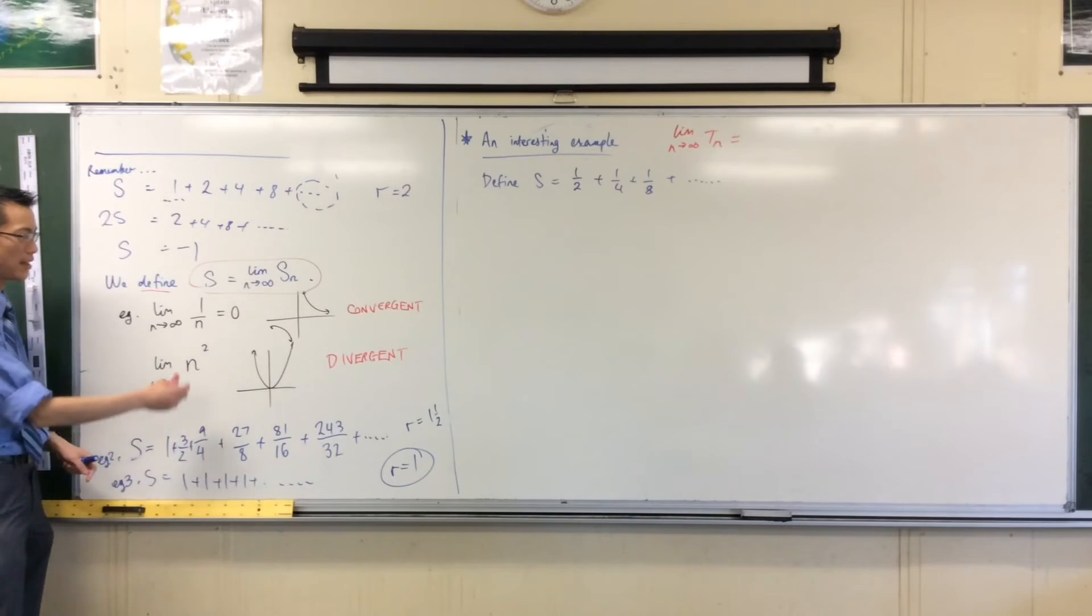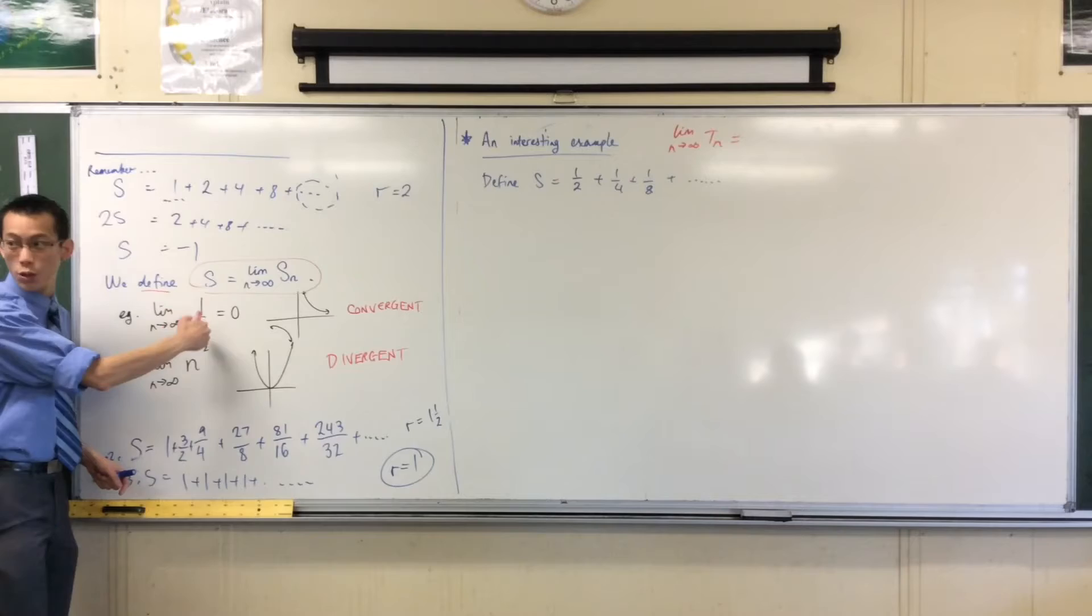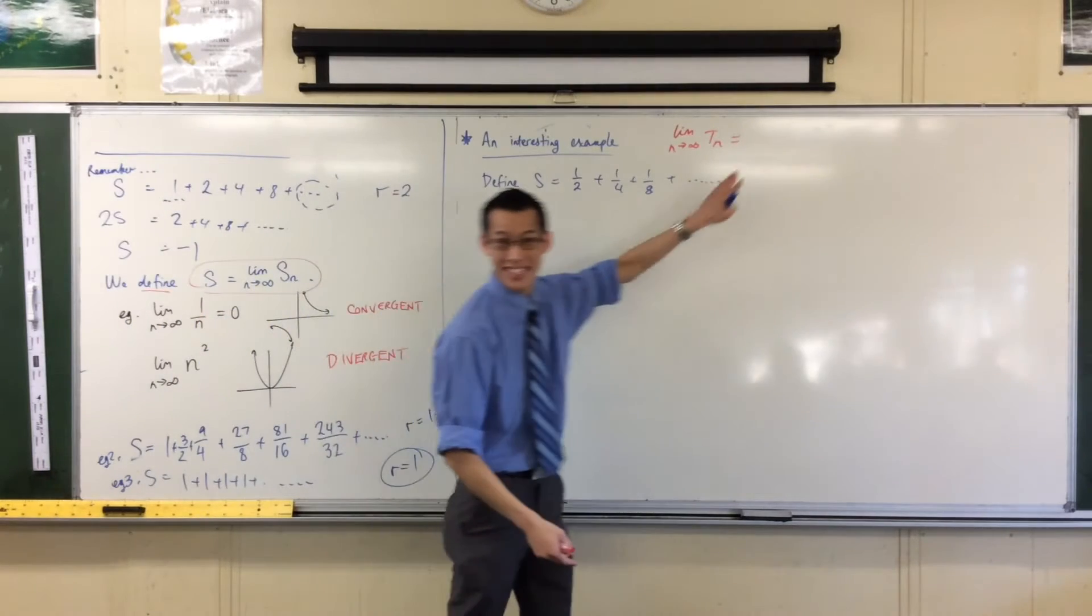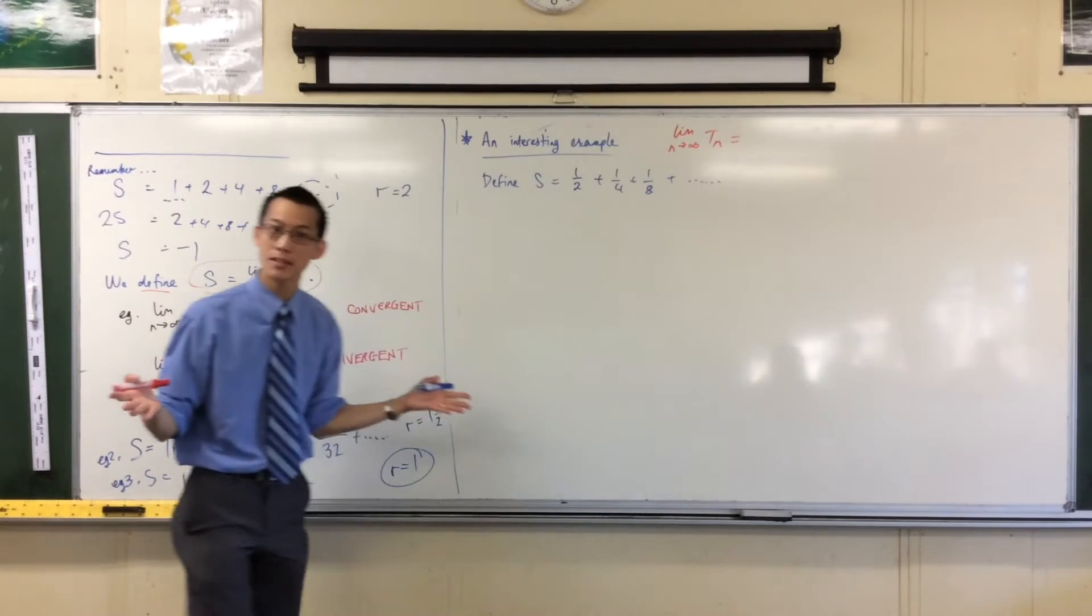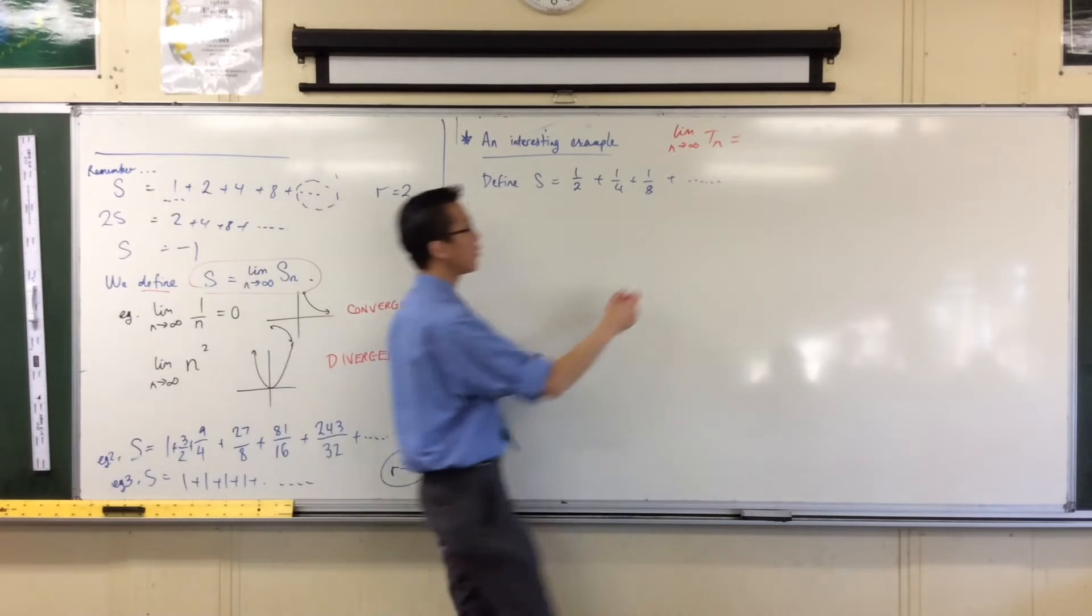A half, then a quarter, then an eighth, then a sixteenth. They're clearly going towards zero, right? In fact, that is kind of behaving like this, only faster, because rather than going 1, 2, 3, 4, 5 on the denominator, I'm going 2, 4, 8, 16 on the denominator. Does that make sense? So each individual term is doing what this is doing, so it's going towards zero.